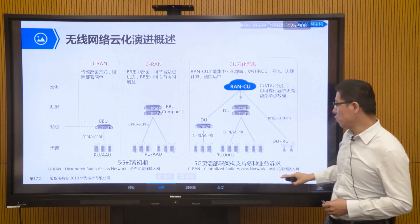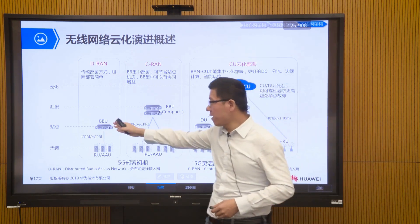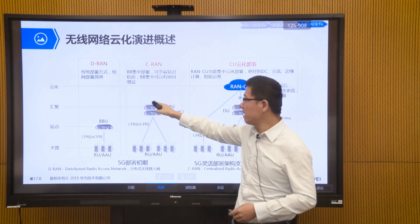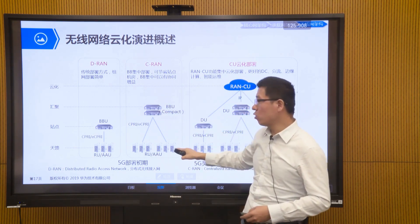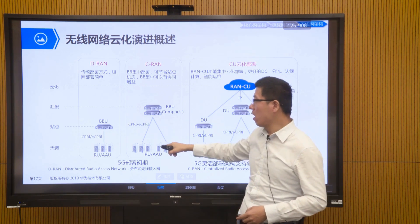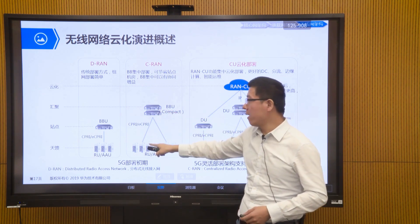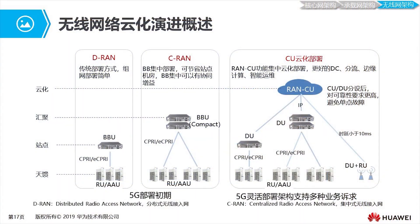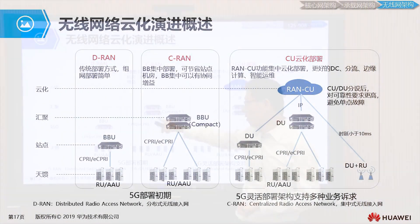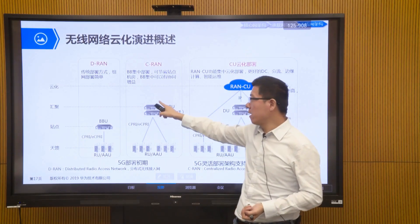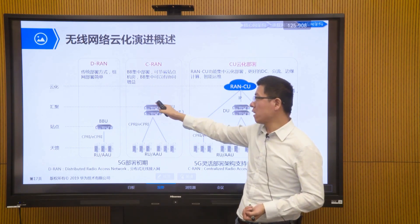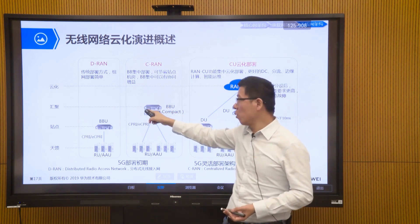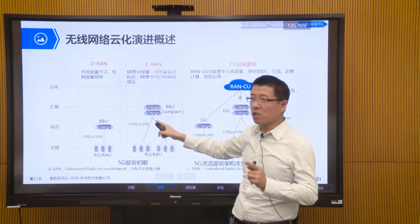So later, we had a plan called CRAN — Centralized Wireless Access Network. We will centralize the baseband unit that processes digital signals at the base station, place it centrally, and form it into a baseband resource pool. Then the radio units that process analog signals are extended by optical fiber, placed on rooftops, lamp posts, or towers, and connected through underground CPRI optical cable to a converging machine room. We put 10 or 20 BBUs together. The benefit is we can more easily achieve inter-site collaboration.